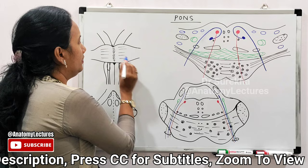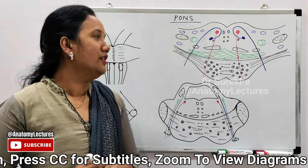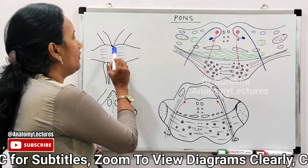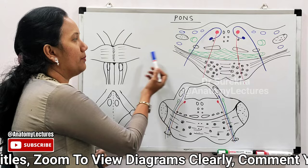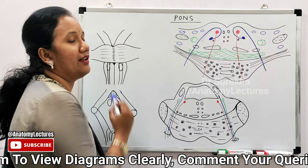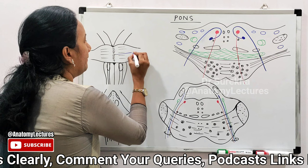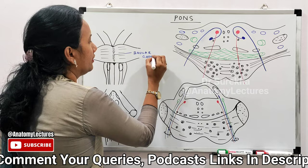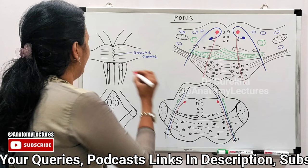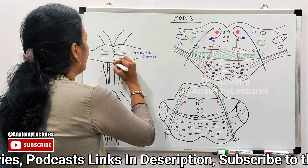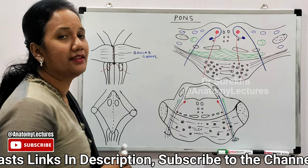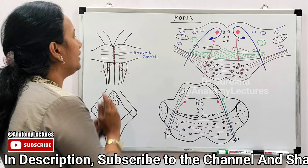The ventral surface is transversely striated because fibers running from the pons to the cerebellum travel transversely, passing through the middle cerebellar peduncle into the cerebellum. In the midline there is a groove called the basilar groove, named because it lodges the basilar artery — formed by the union of the two vertebral arteries — which runs in this groove.